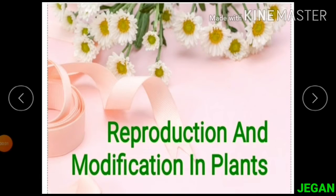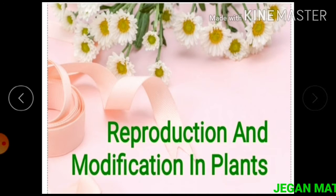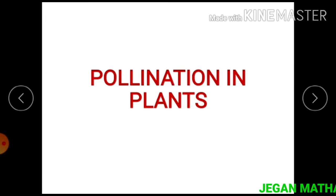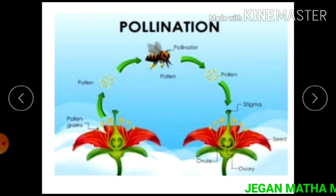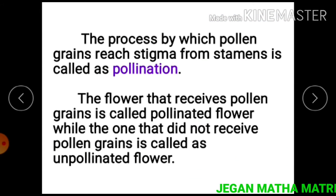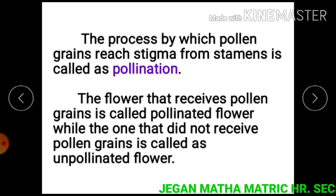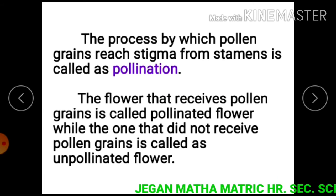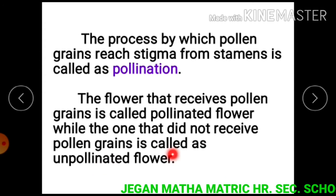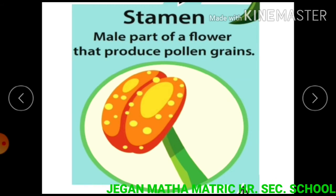Welcome to science class. This is the continuation class of reproduction and modification in plants. In this class we learn about pollination in plants — the process by which pollen grains reach the stigma from stamens is called pollination. The flower that receives pollen grains is called a pollinated flower, whereas the plant that does not receive pollen grains is called an unpollinated flower. This is the stamen.